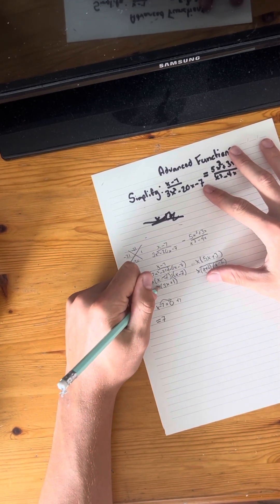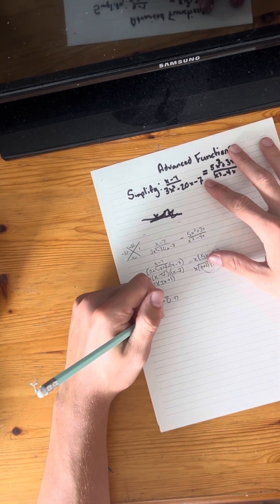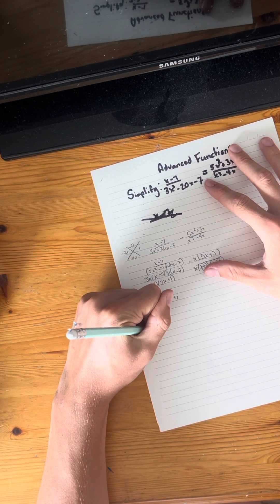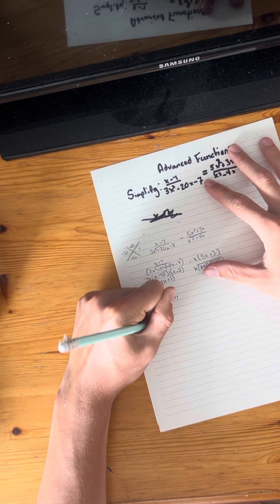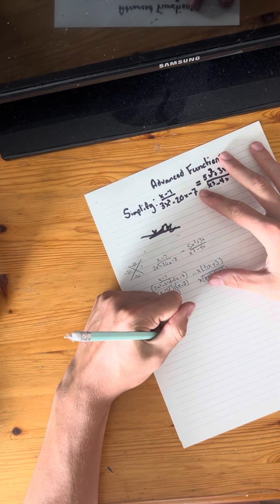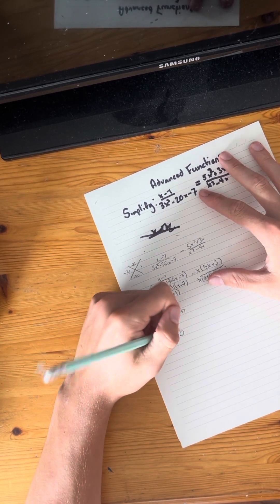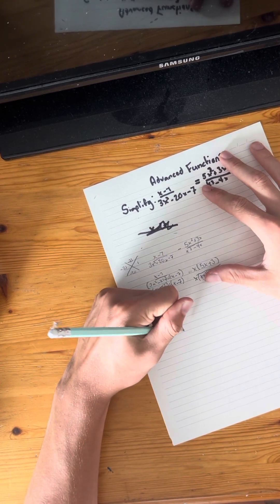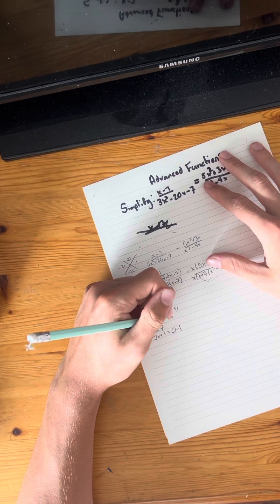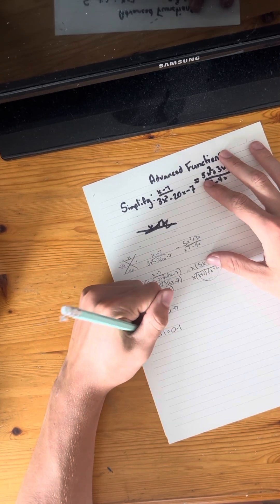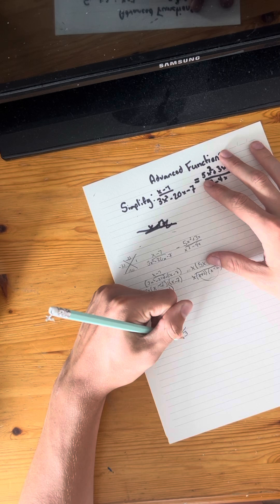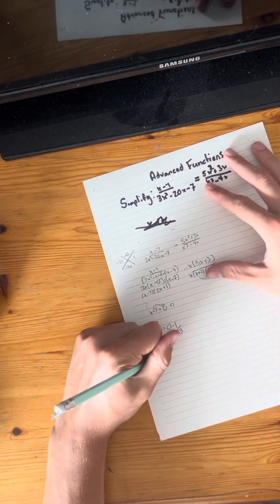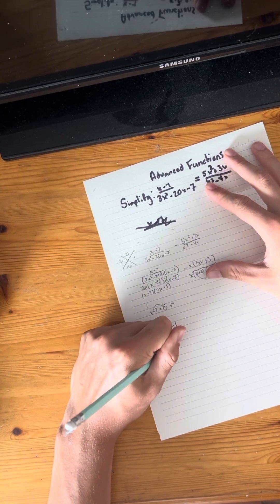Over here, we're going to do 3x plus 1, and that would equal zero. And so what do we go from there? Plus one, negative one over here. Zero take away negative one, obviously negative one. And then we bring the x over, so you divide that over three. So that final answer would be negative one over three. So so far we have zero and negative one over three.